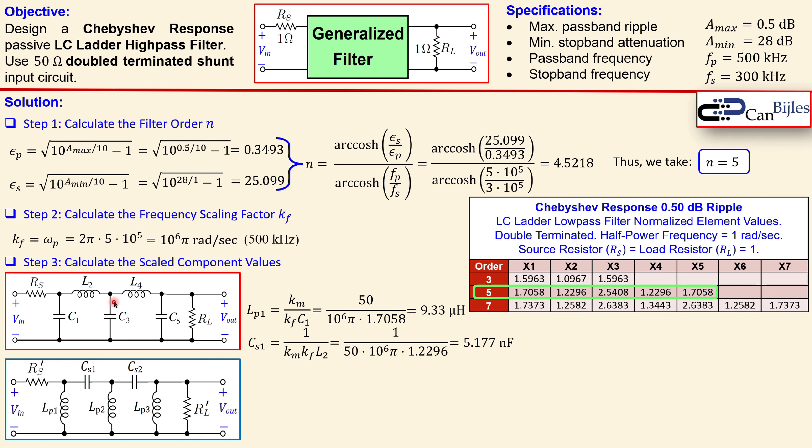Lp2 is now related to c3 which is this coefficient 2.5408. You substitute all the values and you get 6.264 microhenries. The cs2 is calculated using the l4 normalized value, similar to cs1, again the km and the kf and also the l4, and you get the same capacitor value, 5.177 nanofarads. The final one is lp3, which uses the c1 coefficient, so you will get the same value, 9.33 microhenries. The only thing left is the rs and rl prime, so they're now the scaled values. Km times rs will be rs prime, 50 ohms. The other one is also 50 ohms. So we have now all the values we need.